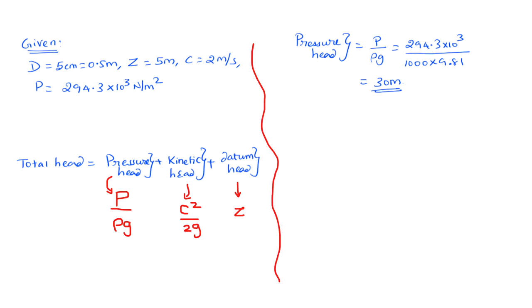Okay. The pressure head we know is p by rho g. So we know the pressure value, rho is the density of water because it carries water, or if it's not given, you can just take it to be water. Thousand times 9.81. You put it in the calculator and you get the pressure head to be 30 meter.